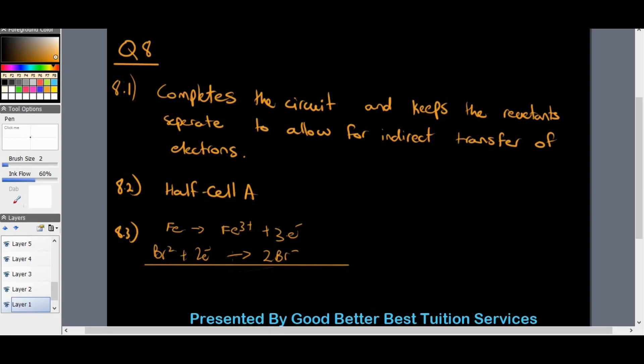Okay, so it's the Fe3 plus. So we can see here that definitely our reactions are not balanced. So we need to balance the electrons. So we're going to multiply this equation by 3 and we're going to multiply this equation by 2.